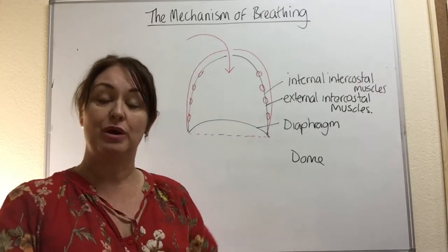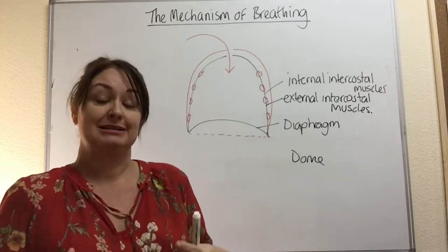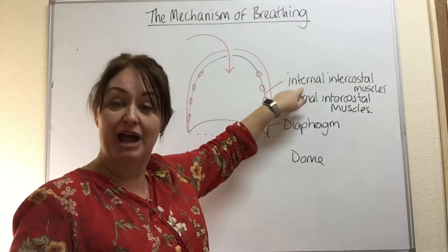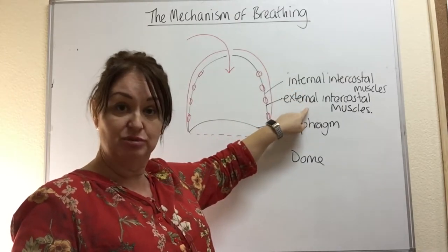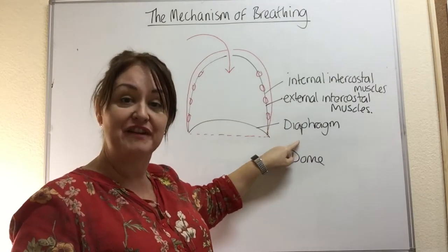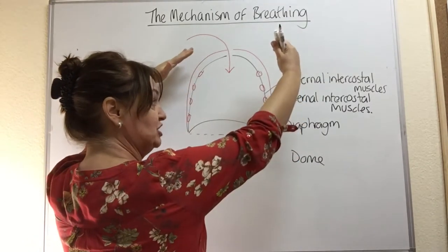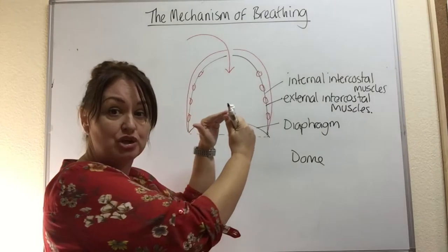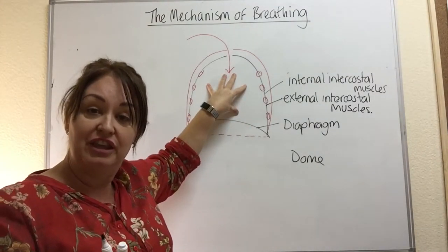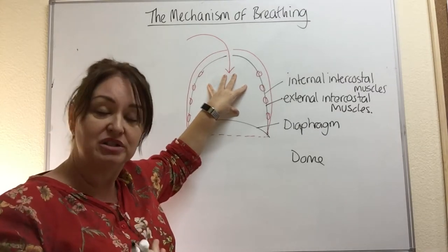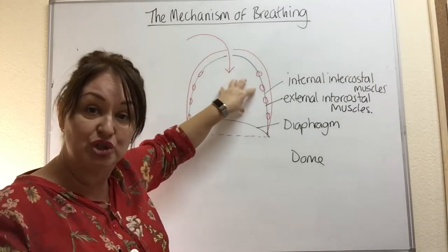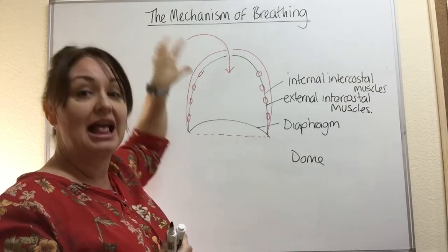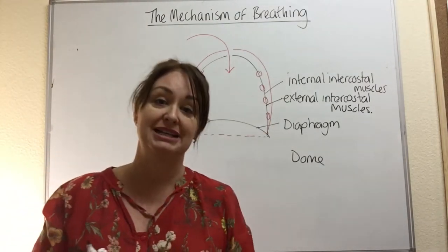The reverse is true when we want to exhale — when we want to get rid of that spent air, we do the complete opposite. The internal intercostal muscles contract, which means the external intercostal muscles relax. The diaphragm also relaxes, and all of those changes make the rib cage move down and in, and the diaphragm returns to its dome shape, decreasing the volume of the thorax. Because of that, the pressure is now too high inside compared to atmospheric pressure on the outside, so to equalise, air rushes out. That whole process is ventilation.